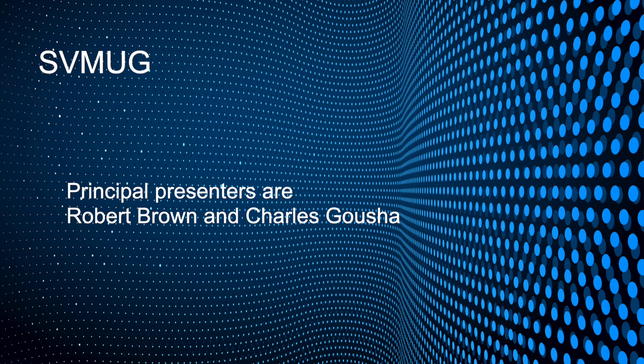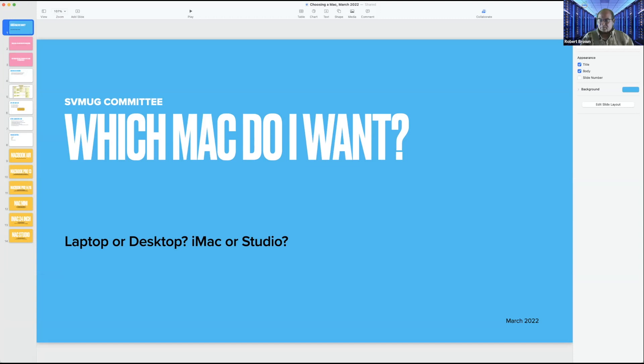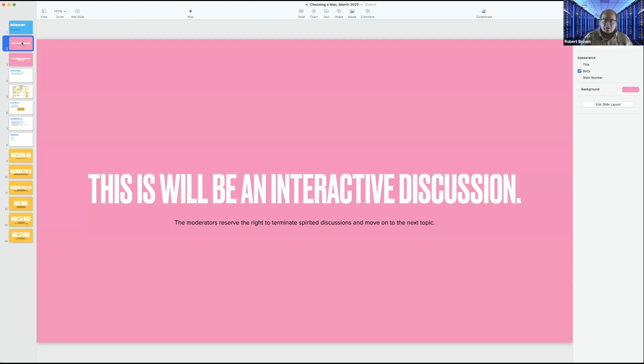Tonight we're doing a little interactive discussion between all the members, and I have a little slideshow to guide it. Charles will be a major contributor to the discussion. It's going to be about how to choose a Macintosh computer — specifically, which Mac do I want: laptop, desktop, iMac, or Studio? We want this to be an interactive discussion and hear input from members about their opinions on the different alternatives.